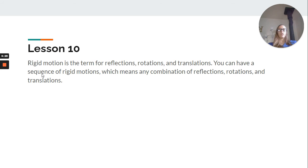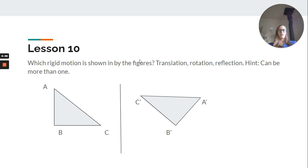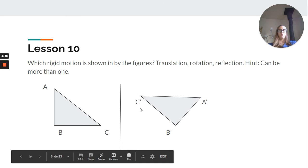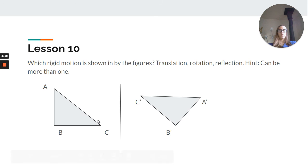And then, lesson 10, we learned that rigid motion is the term used for reflections, rotations, and translations. So, you can have a sequence of rigid motions, or any combination of reflections, rotations, and translation. So, we talked about which one is shown by the figures. And it can be more than one. So, here we have C and C closest to the line. So, we know a reflection happened. But, it also looks different. So, it was reflected. And then, rotated.